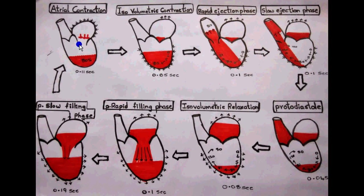At this stage, the bicuspid valve — the connection between the atria and ventricle — is open, and the semilunar valve connecting the ventricle and aorta is closed.